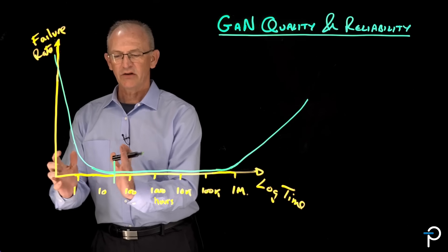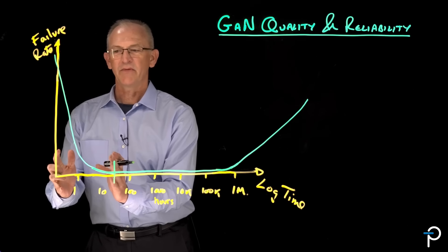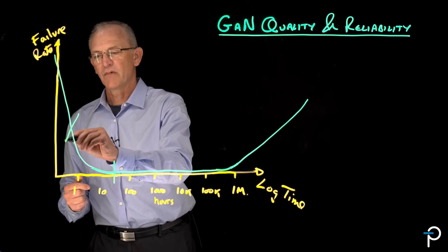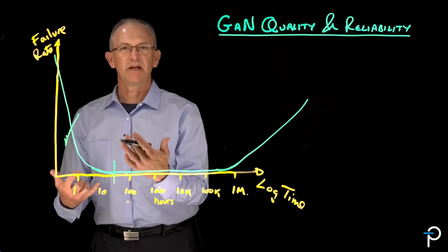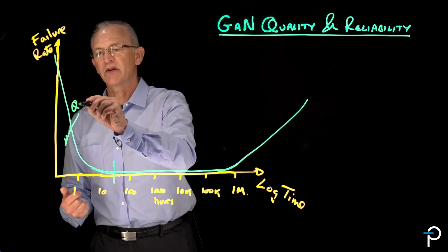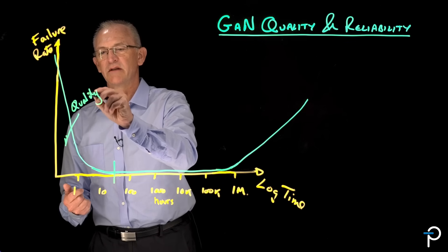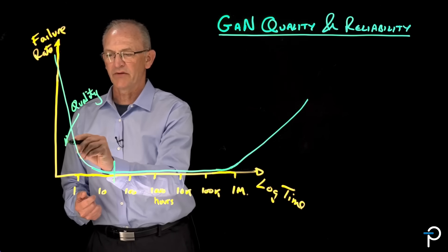In the early phase of a product's life, you get quality-related mismanufactured products. So this is our initial quality part of the bathtub curve.